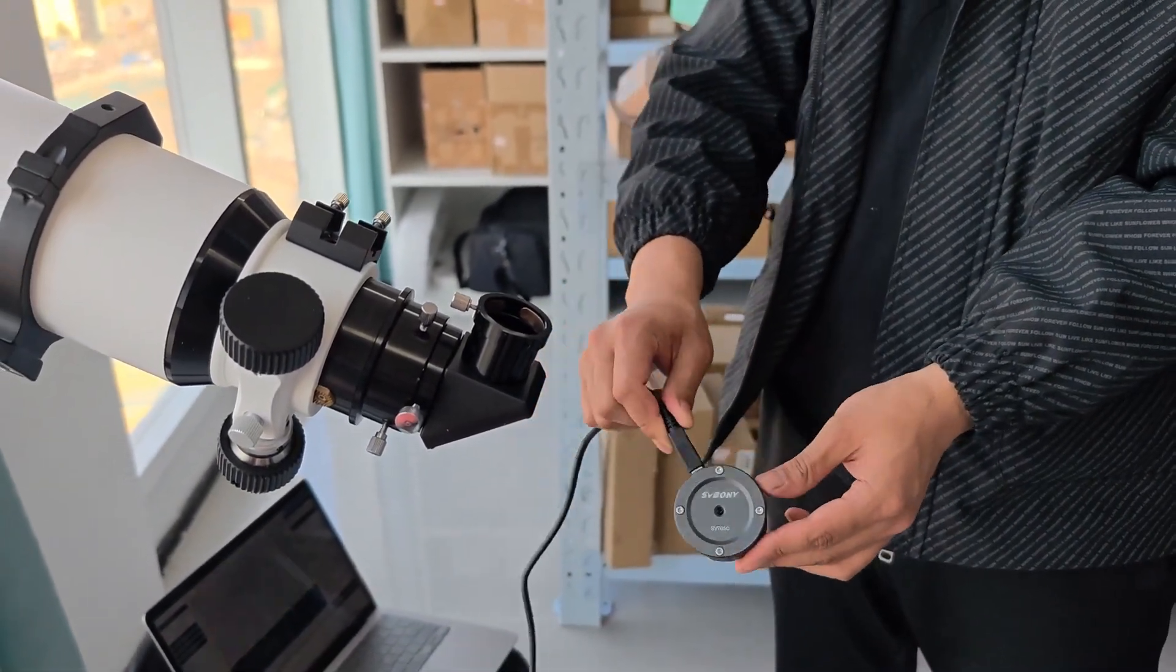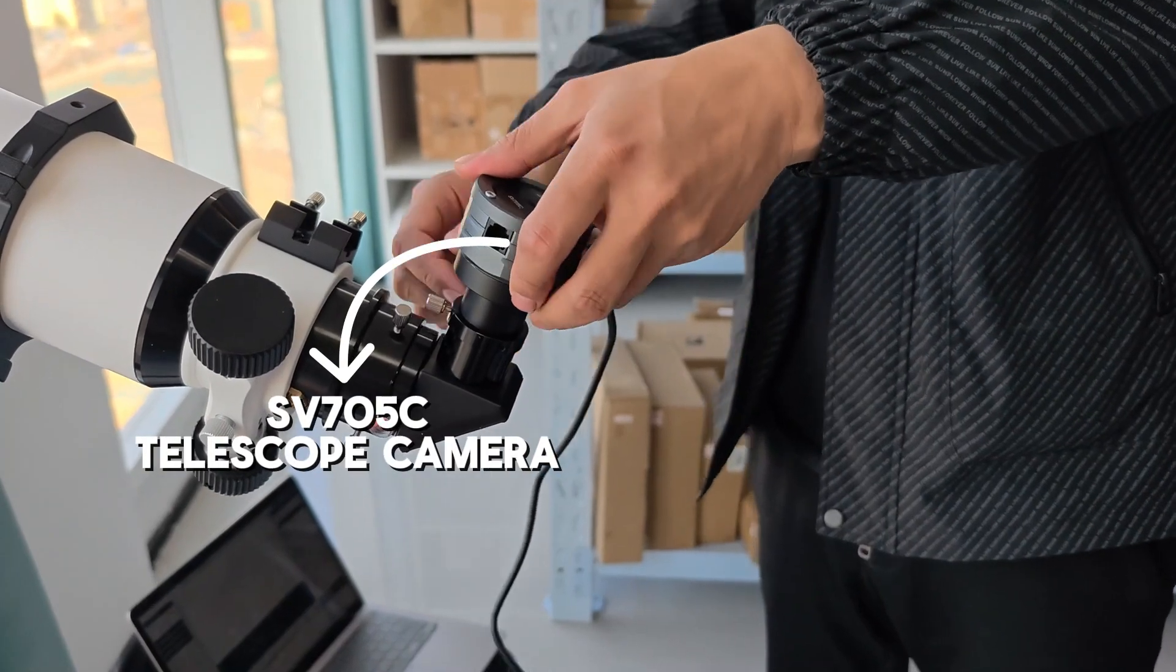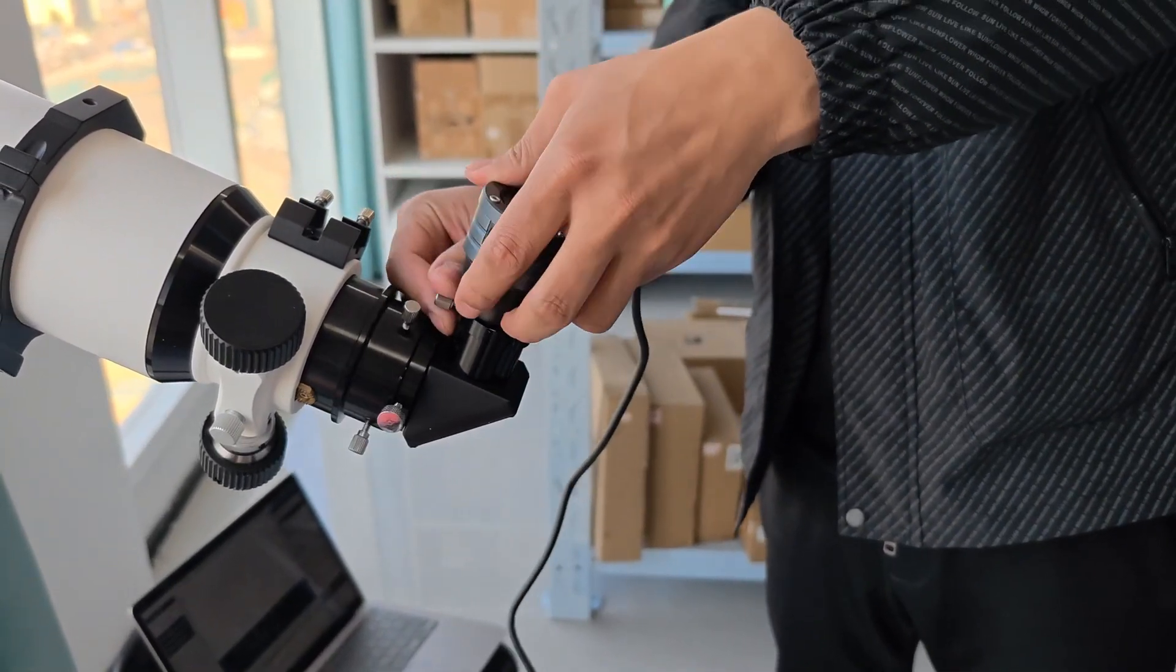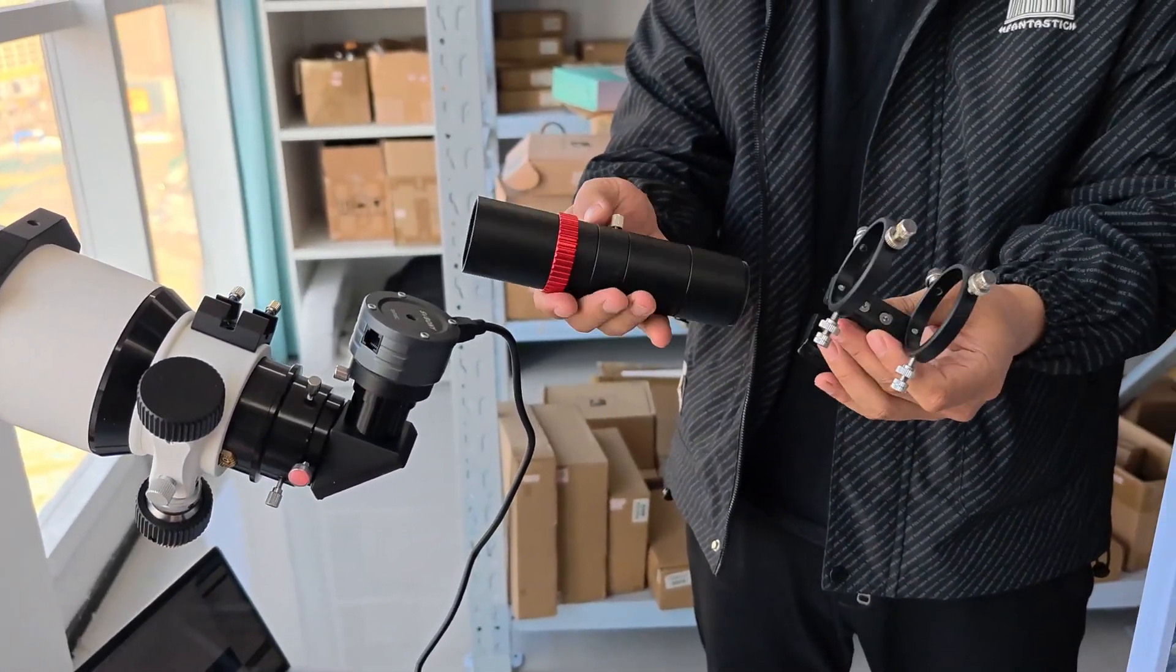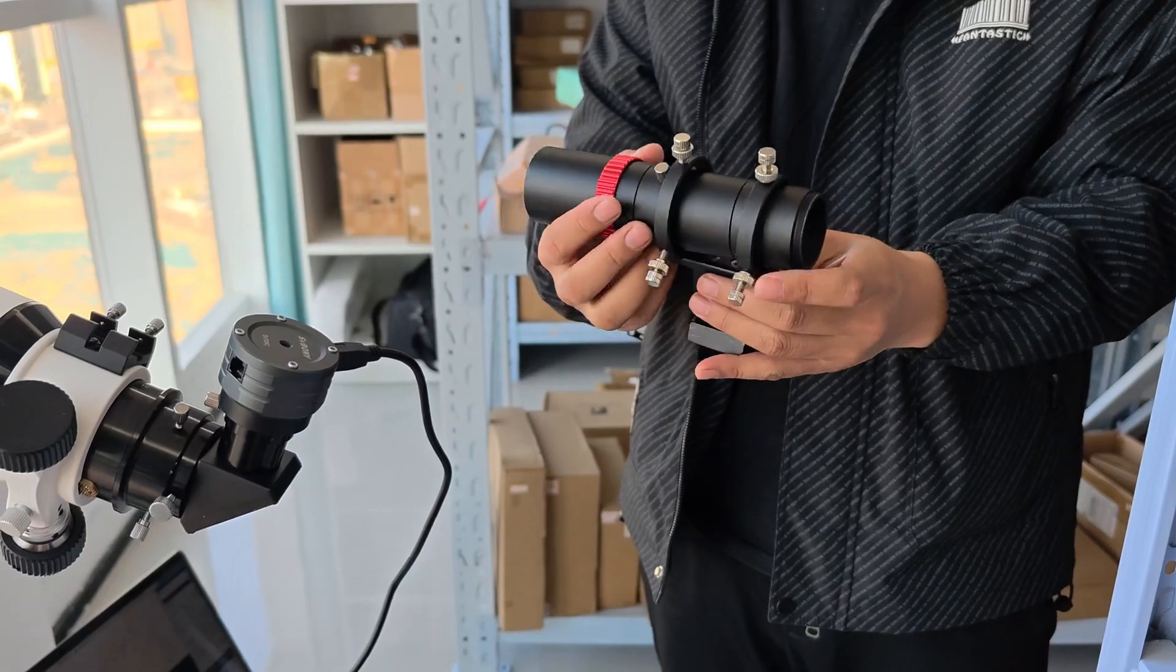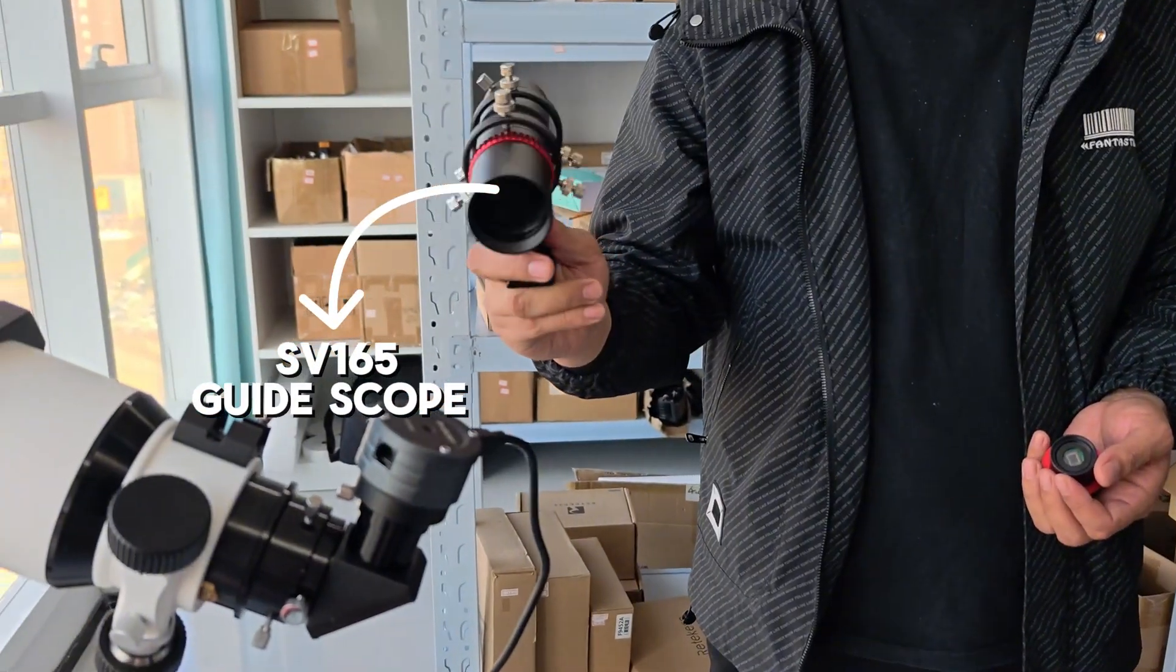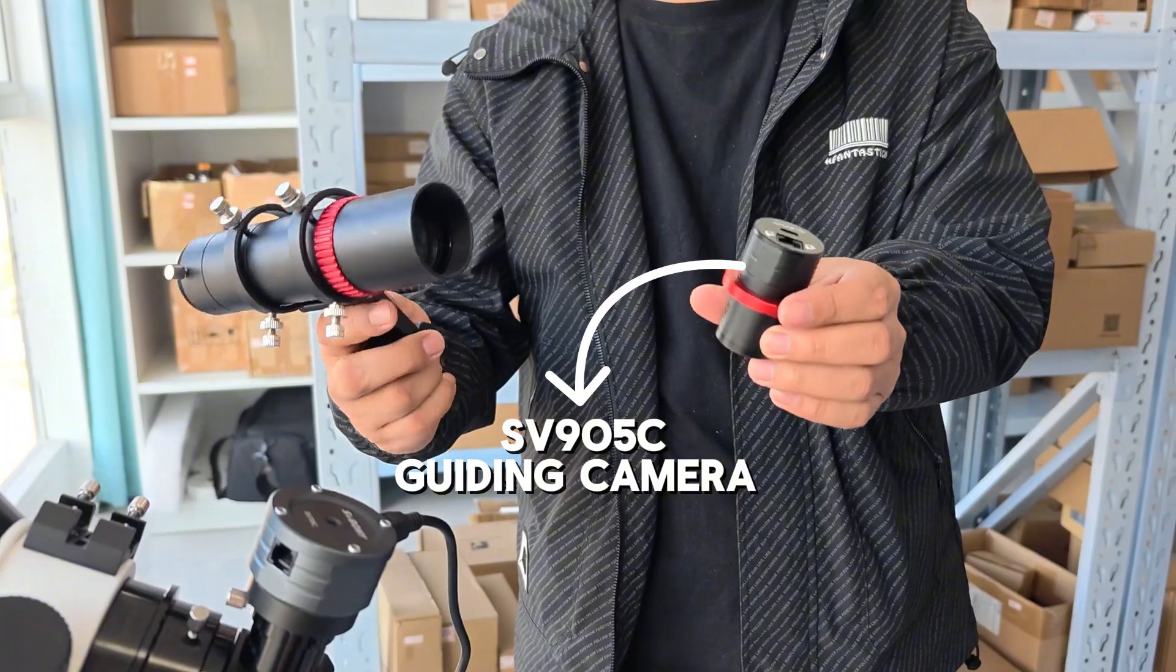Then we install the Iceway 705C astro camera to the Zenith mirror to ensure the camera can steadily focus on the celestial objects. In order to accurately track the objects, we also need to install the Iceway 165 guide scope and the Iceway 905C guide camera to ensure stable and clear images when taking pictures.